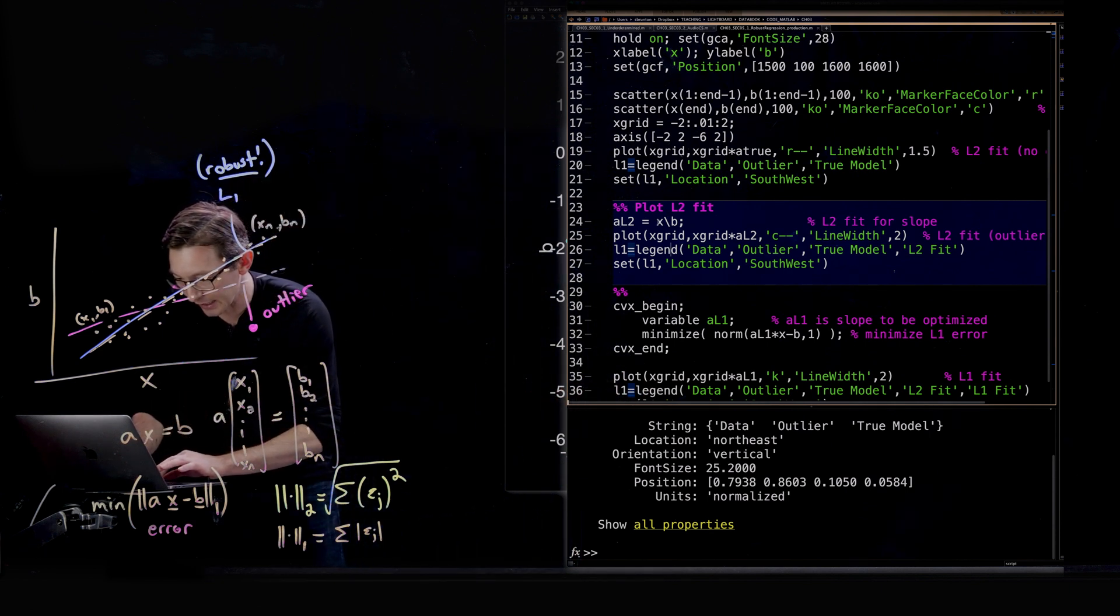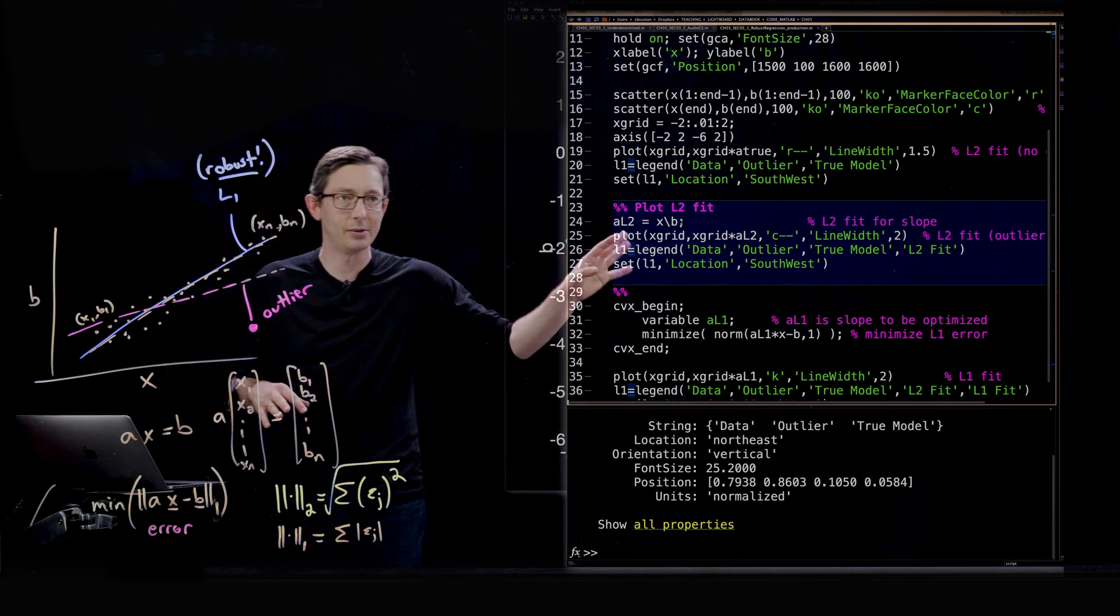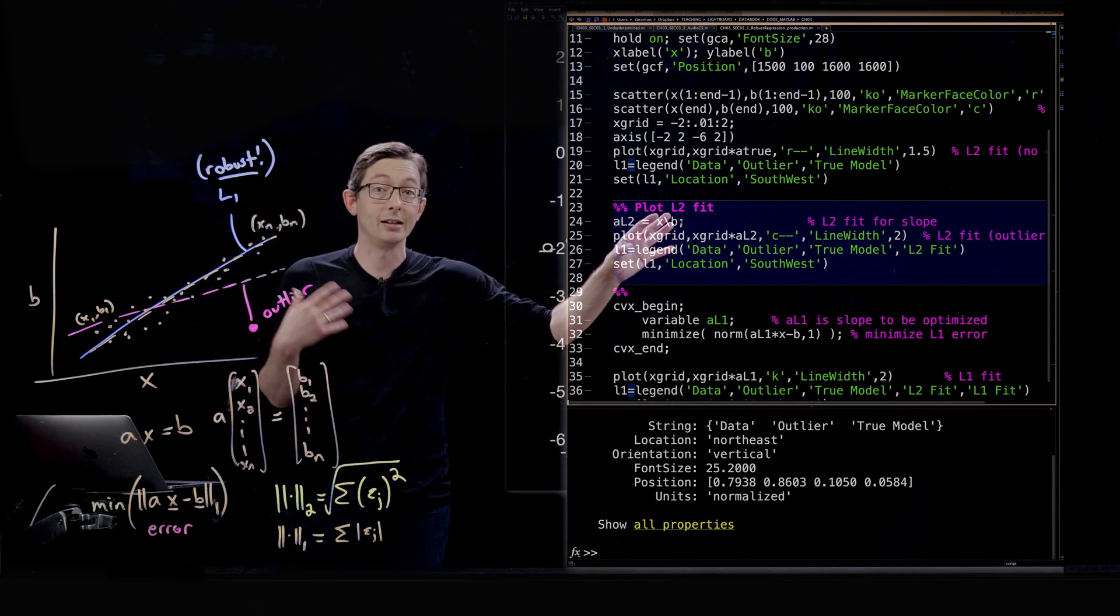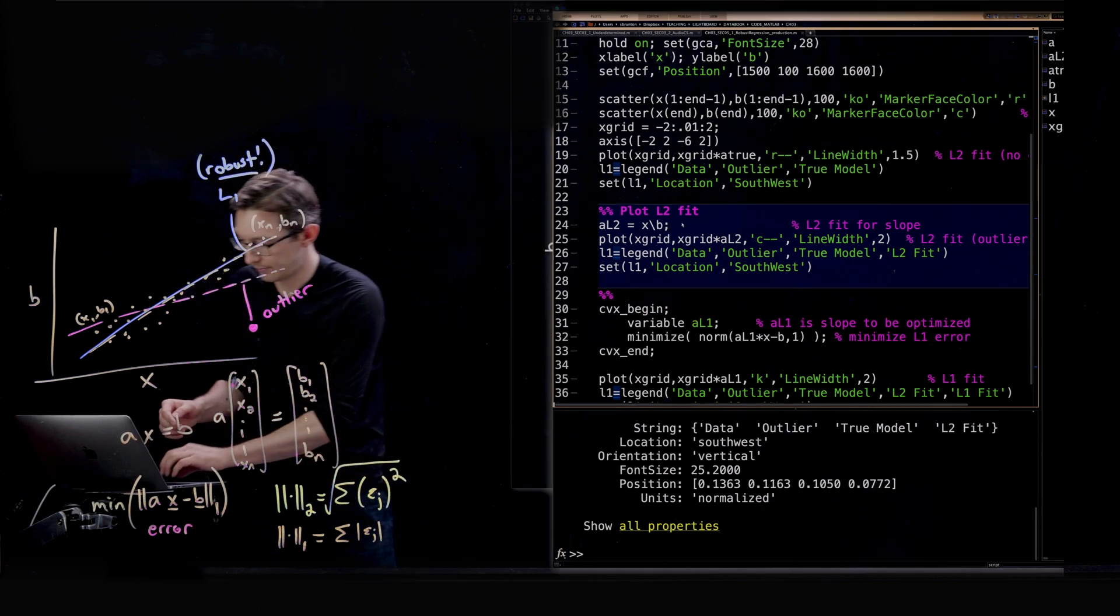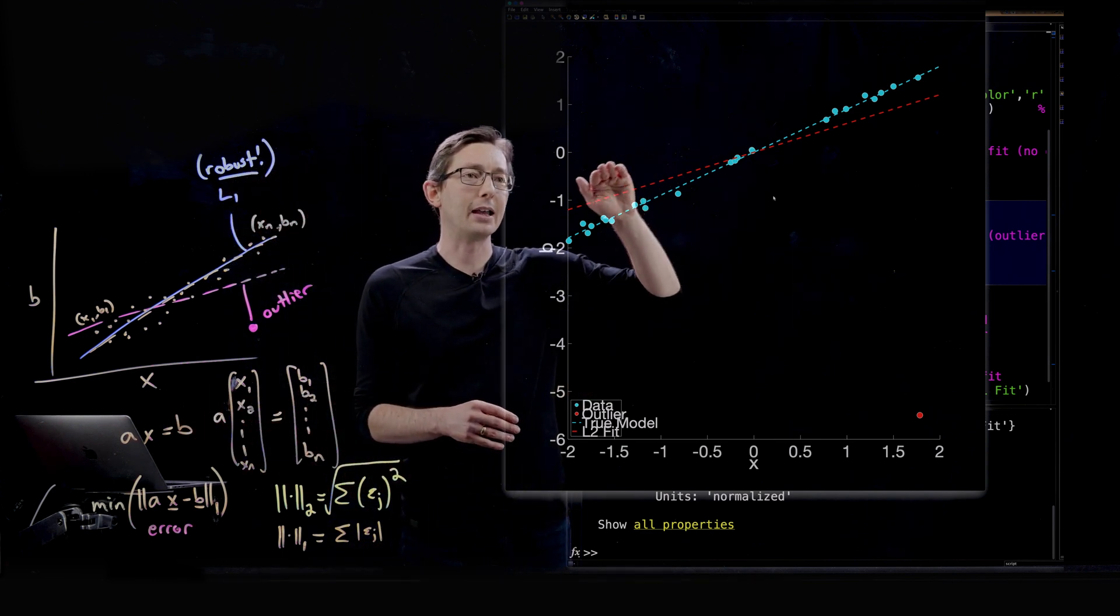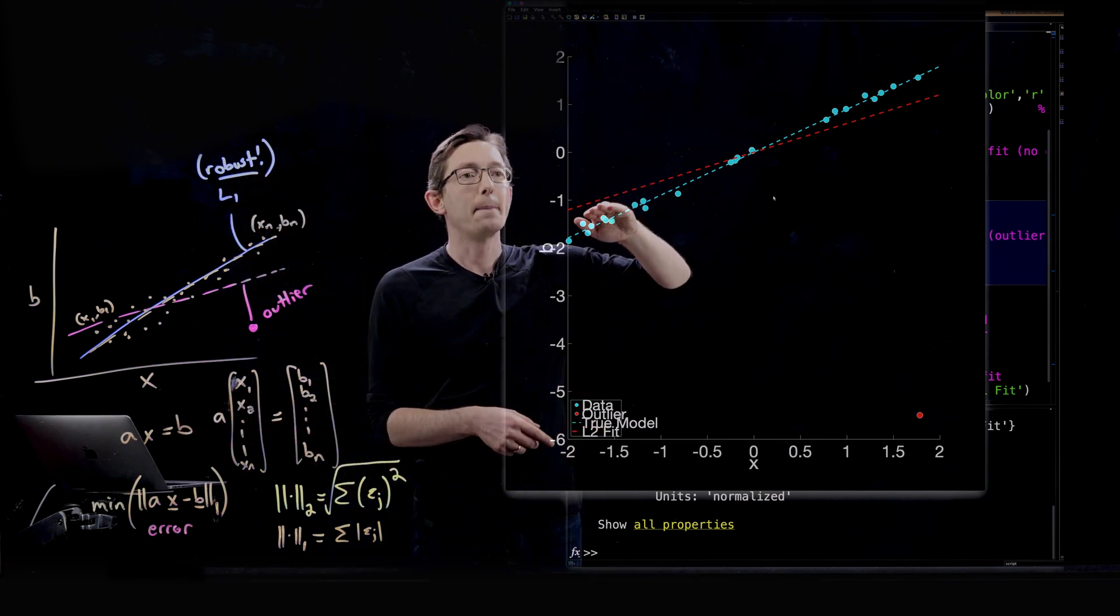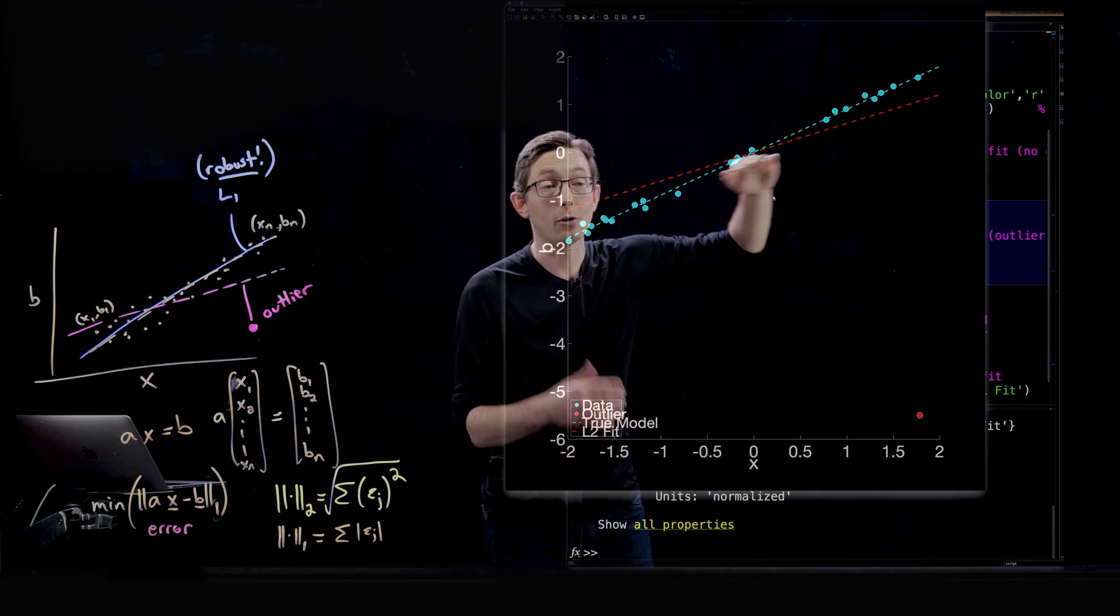And again in MATLAB this is really easy, this is just the backslash command, you could also do pseudo inverse. There's lots of ways of doing this. I talk about this a lot in chapter one on the SVD, so I'm going to run this and that adds a data point. And now you can see that my, sorry my legend's messed up, but you can see that my least squares fit now that I have this outlier is really wrong.